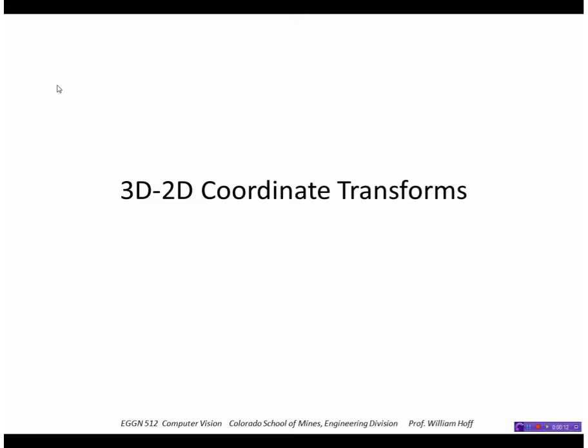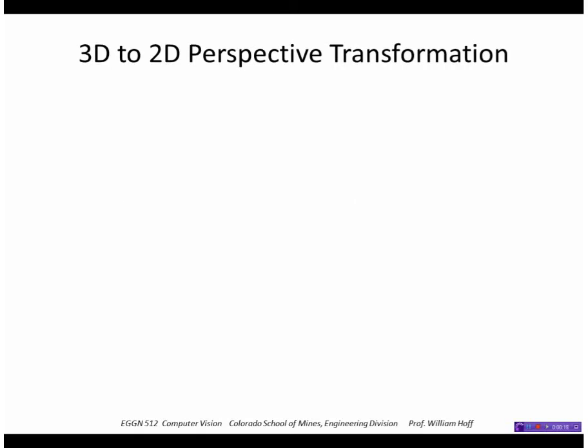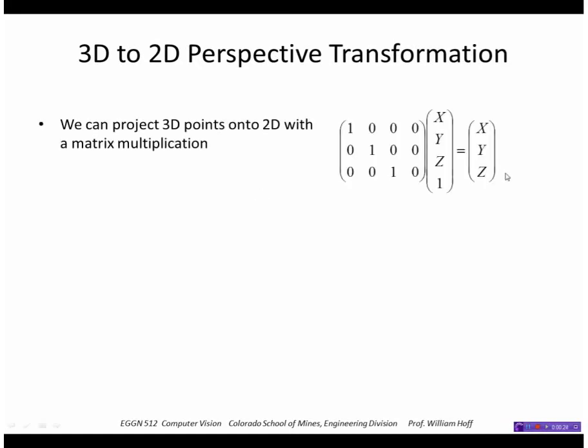I'm going to talk about 3D to 2D coordinate transforms. So the 3D to 2D perspective transform - we've already seen this, but we're going to show a more compact way to describe these using matrices. We need to project a 3D point XYZ to a 2D point.